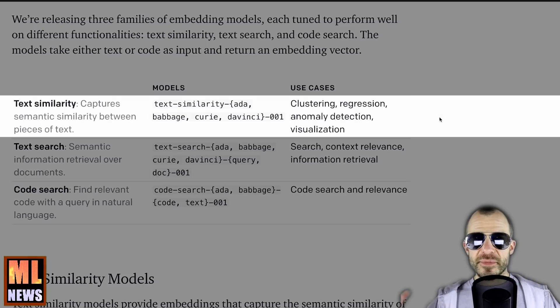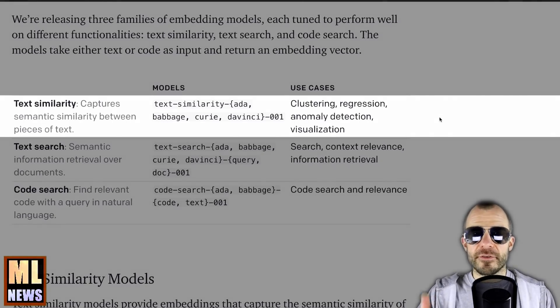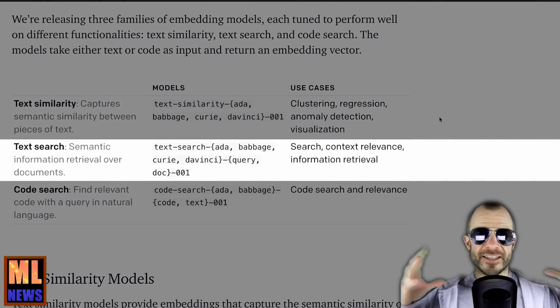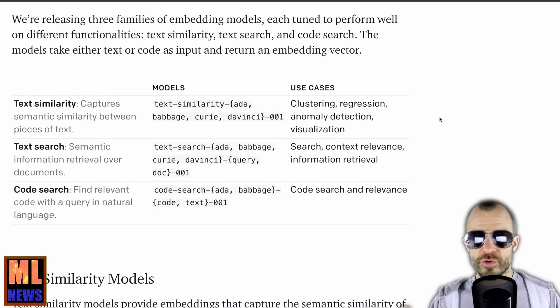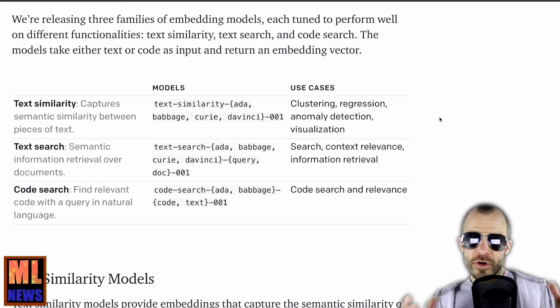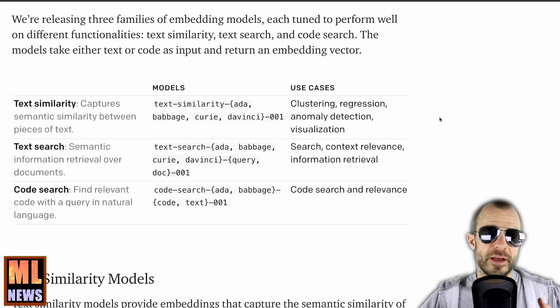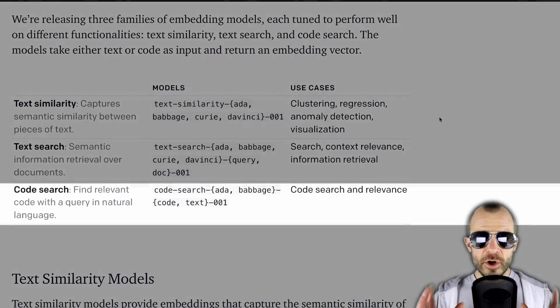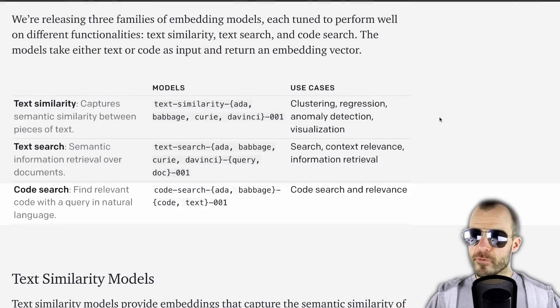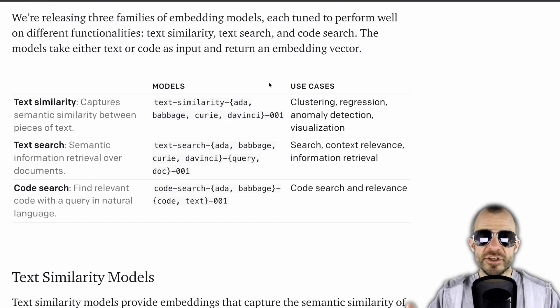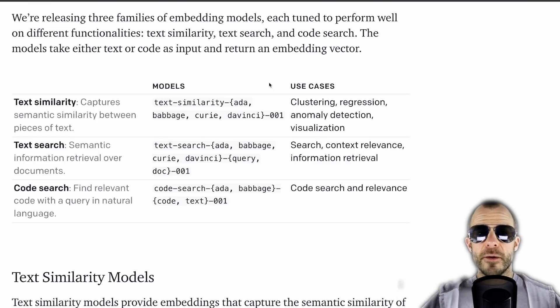One mode is for text similarity, where you put in pieces of text, and if the vectors are close together, the texts are in some way similar. The second is for text search, where they have a separate encoder for documents — longer pieces of content — and queries — shorter pieces of content — and you rank document vectors against the query vector to retrieve relevant documents. The last one is code search, essentially the same as text search for code. These also come in different sizes, with Ada being the smallest and DaVinci being the largest — the original 175 billion parameter GPT-3 model size.